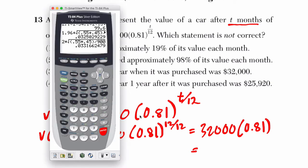Let's see if this is making sense. 32,000 times 0.81, and I get 25,920. Okay, 25,920.